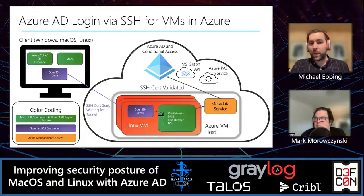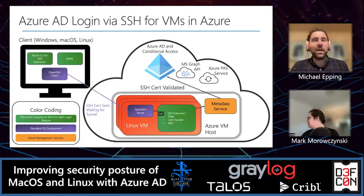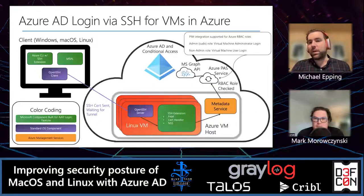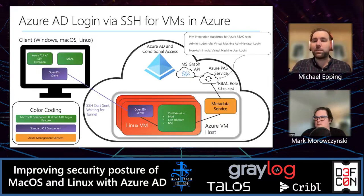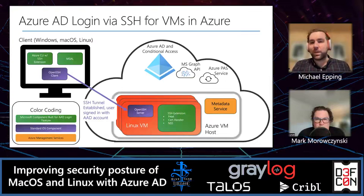Once the user passes all Conditional Access checks, they receive their ephemeral SSH certificate. The OpenSSH client then initiates a connection to the server, passing the certificate as authentication. The OpenSSH server module passes the cert to our installed components, which check with Azure AD to validate it — ensuring it's not forged, issued by the correct tenant, and has correct information. We also check RBAC roles: 'Virtual Machine Administrator Login' (gives sudo rights) or 'Virtual Machine User Login' (no sudo rights). If the certificate is valid and the role matches, the SSH tunnel is established.